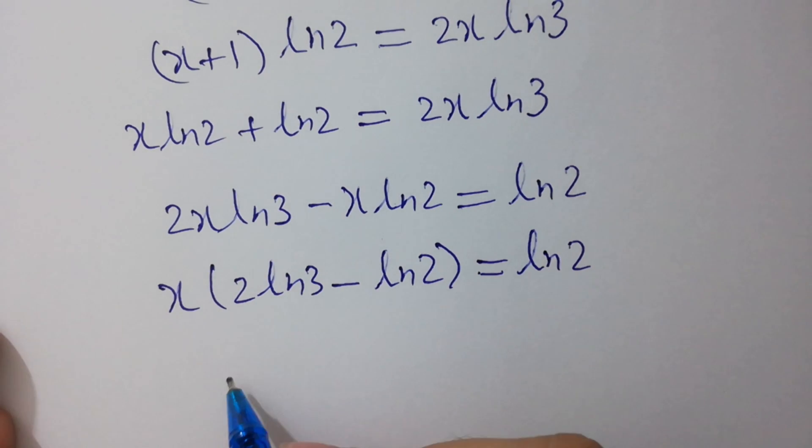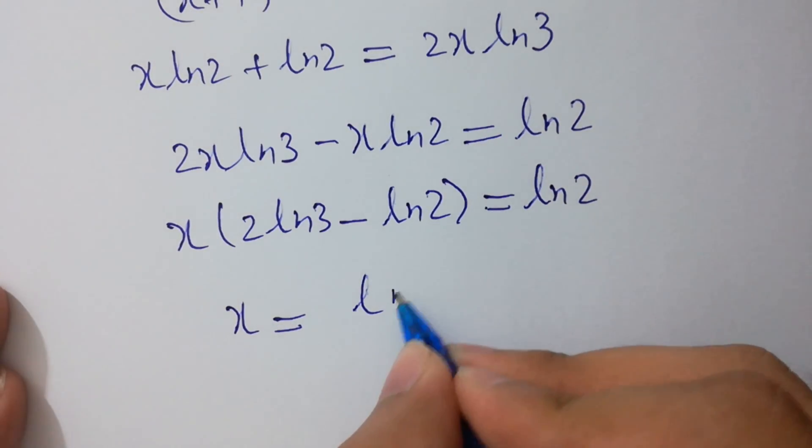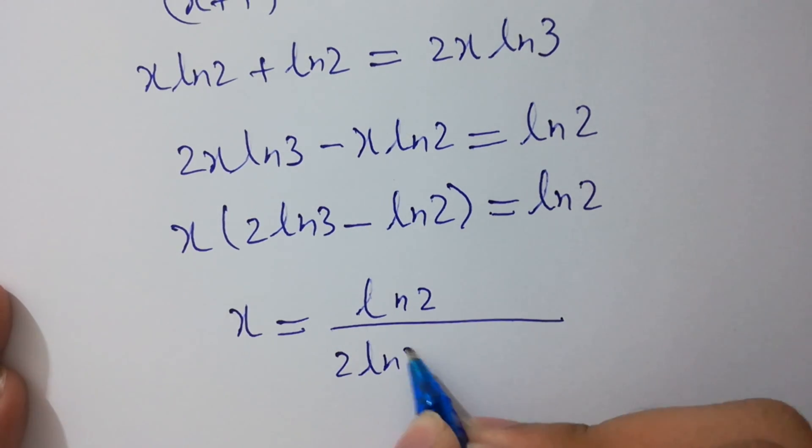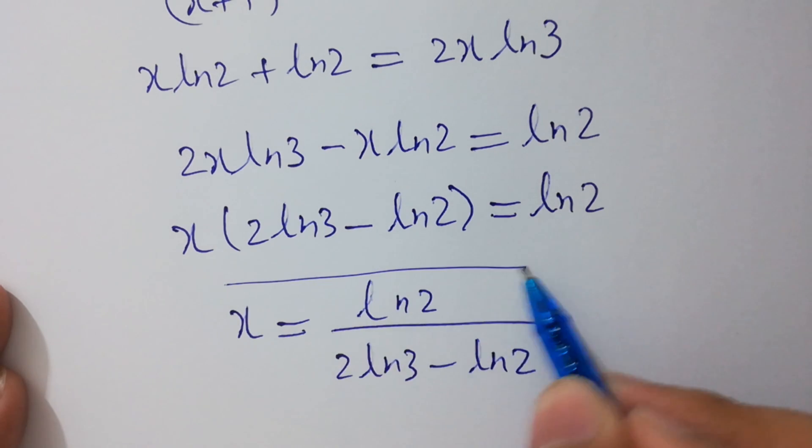Hence, x equals log 2 divided by 2 log 3 minus log 2, which is our correct answer.